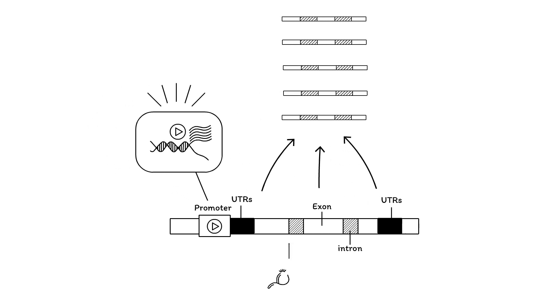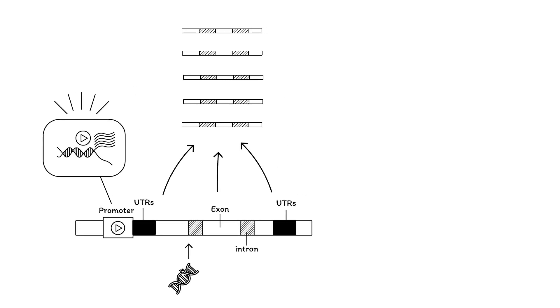If the variant is located at the splice sites, incorrect splicing may occur, causing alternative mRNA products and thus malfunctioning proteins to be made.